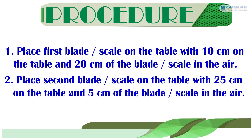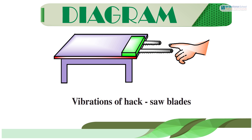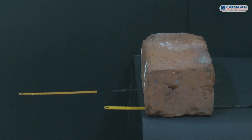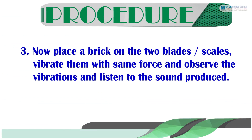Now it is time to see the procedure. Place the first blade or scale on the table with 10 cm on the table and 20 cm of the blade or scale in the air. Place the second blade or scale on the table with 25 cm on the table and 5 cm of the blade or scale in the air. Now place a brick on the two blades or scales, vibrate them with the same force, and observe the vibrations and listen to the sound produced.